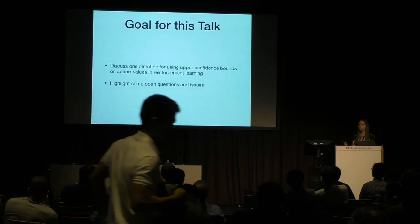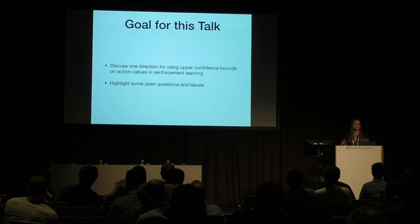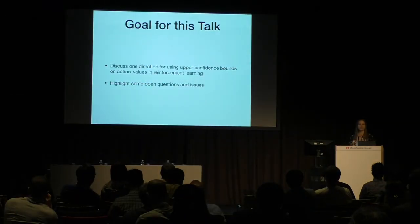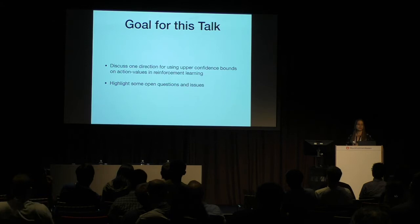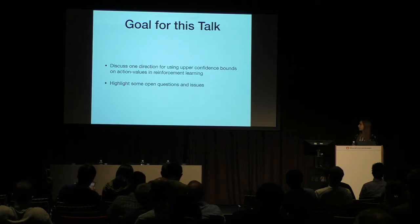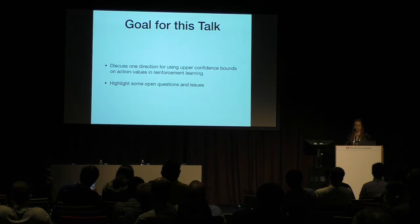This talk is going to be a little open-ended. My goal is not really to present highly polished work with concrete answers. I want to highlight some questions that I think are open in terms of how we get upper confidence bounds for action values. I invite you to tell me if you agree, and if there are other things you think are more problematic. I'll discuss one direction for computing upper confidence bounds, then highlight some open questions.